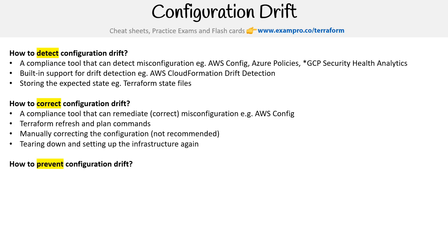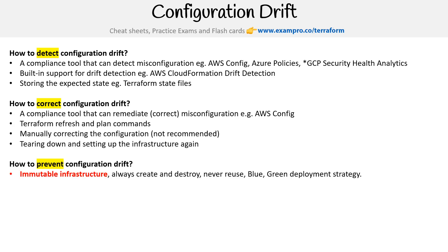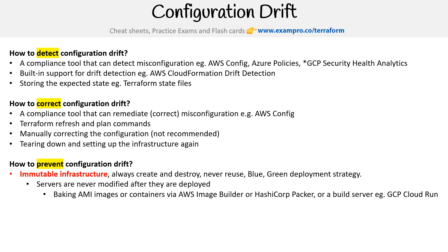Then there's prevention, which is the important part and kind of why we're talking about configuration drift — it's all about immutable infrastructure. Always create and destroy, never reuse. That might mean blue-green deployment strategies where servers are never modified; they are always deployed with a new version. The way you would do that is by baking AMI images or containers via AWS Image Builder, HashiCorp Packer, or a build server like GCP Cloud Run or AWS CodeBuild.